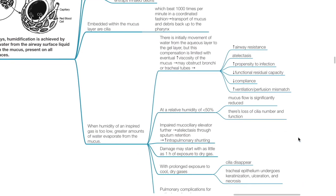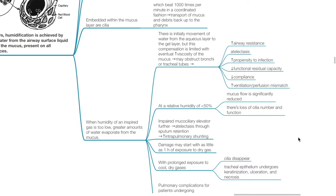When humidity of an inspired gas is too low, greater amounts of water evaporate from the mucus. There is initially movement of water from the aqueous layer to the gel layer, but this compensation is limited, with eventual increases in viscosity of the mucus. This may obstruct bronchi and tracheal tubes, increasing airway resistance, causing atelectasis, increasing the propensity to infection, reducing FRC, reducing compliance and increasing ventilation-perfusion mismatch. At a relative humidity of less than 50%, mucus flow is significantly reduced and there is loss of cilia number and function. Impaired mucociliary elevator further increases atelectasis via sputum retention and this increases intrapulmonary shunt.